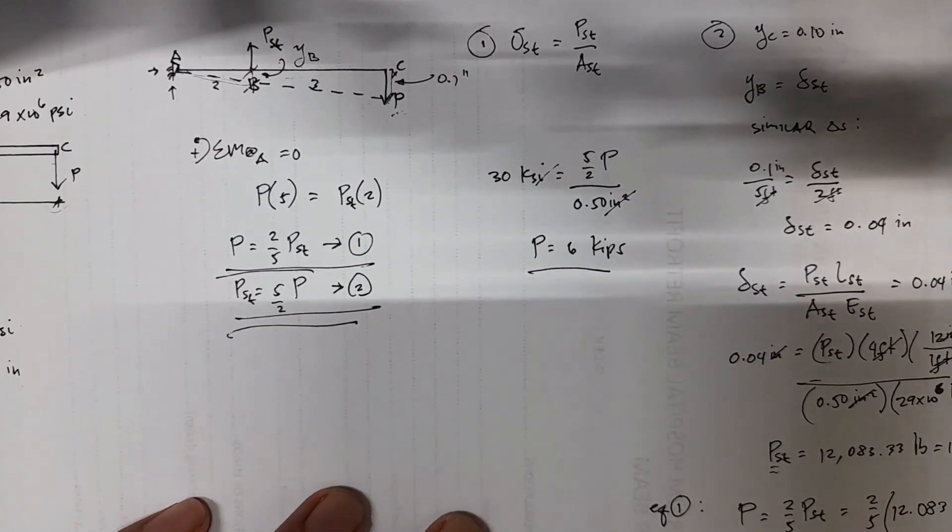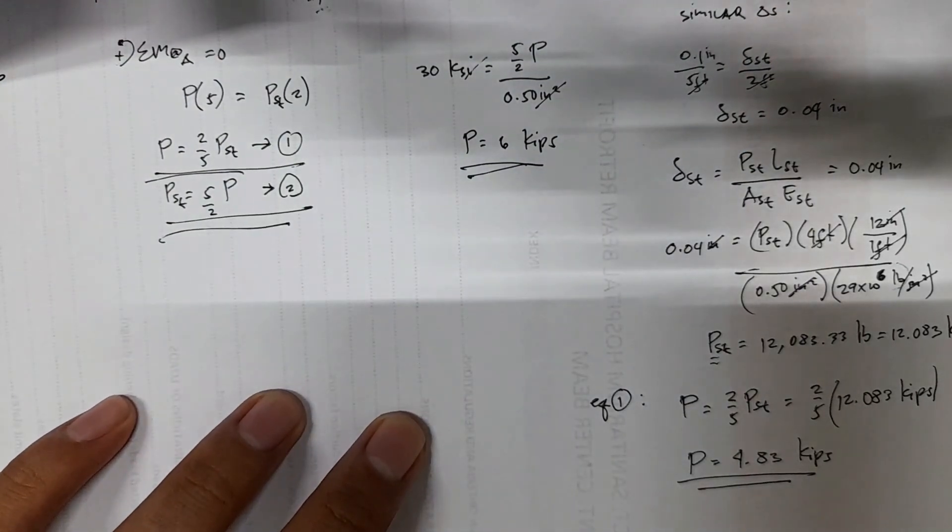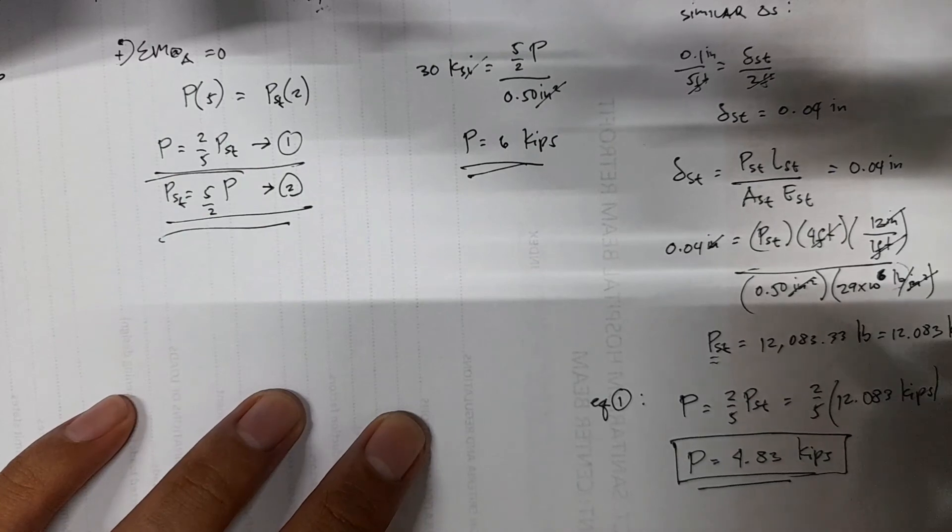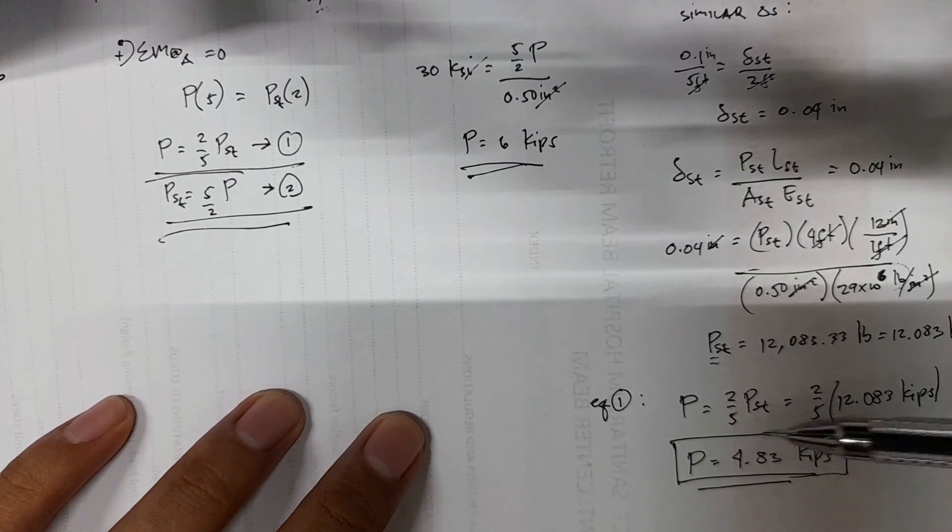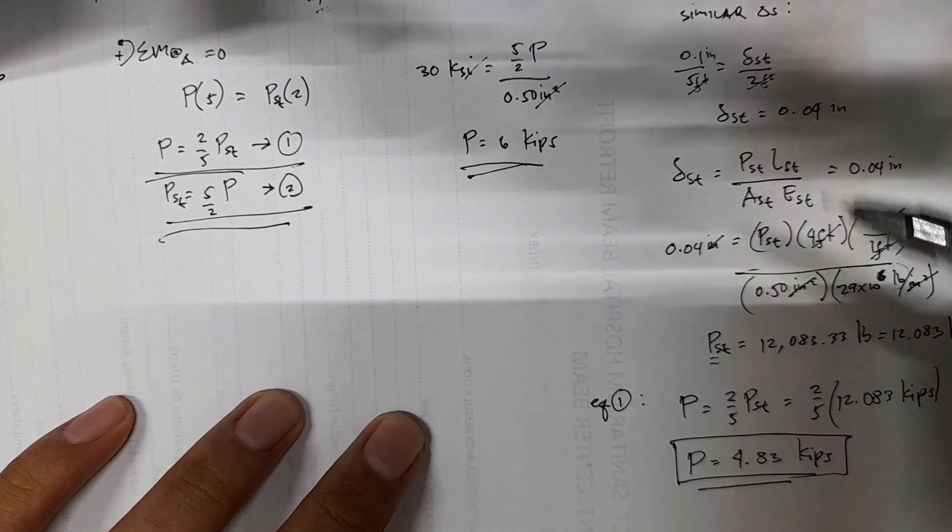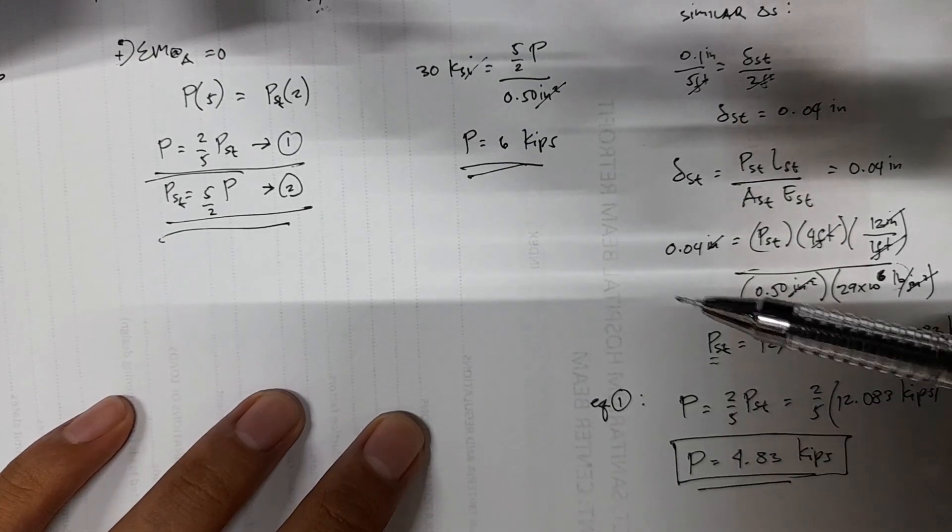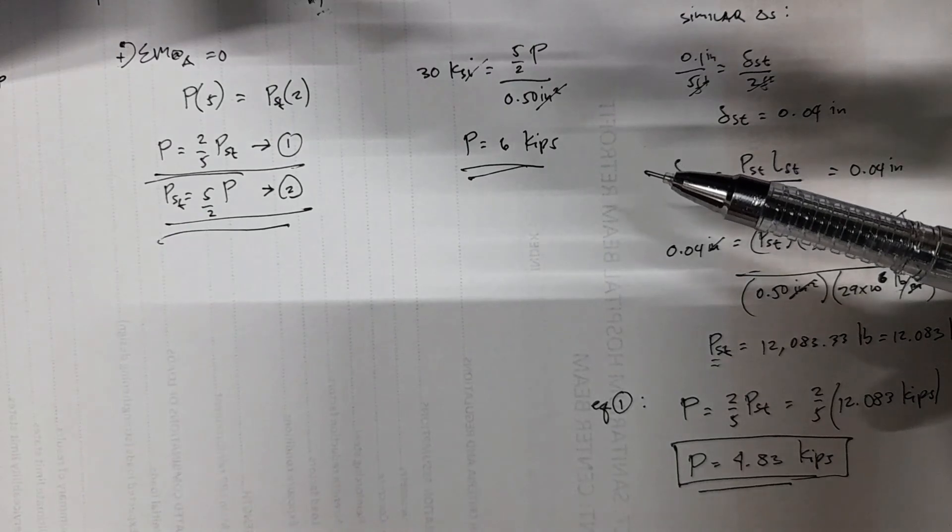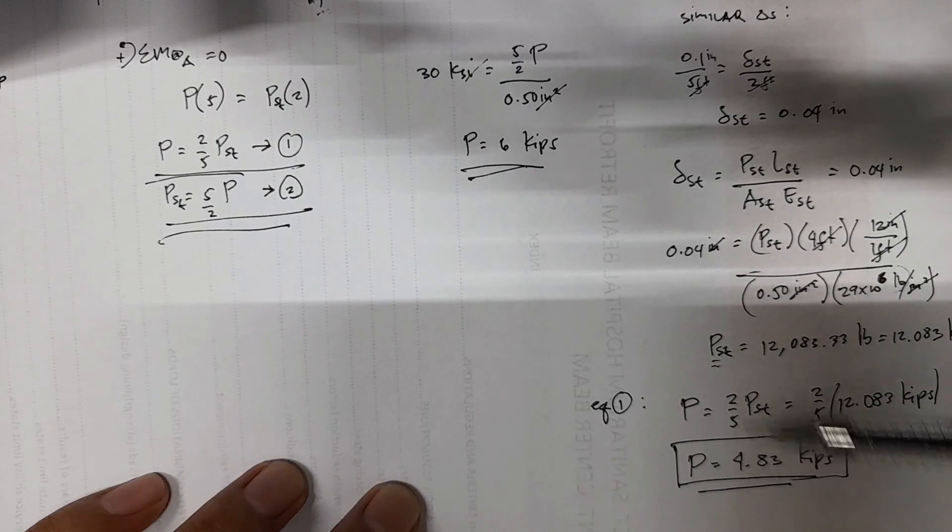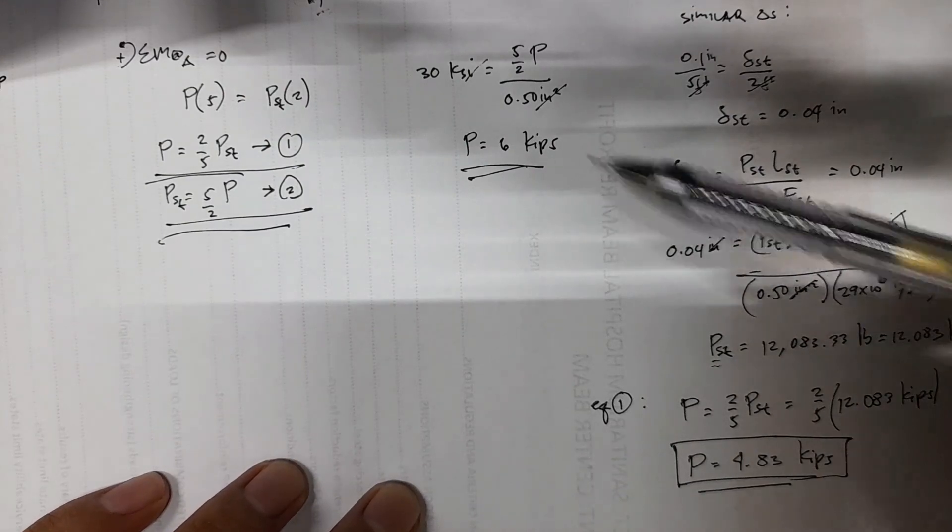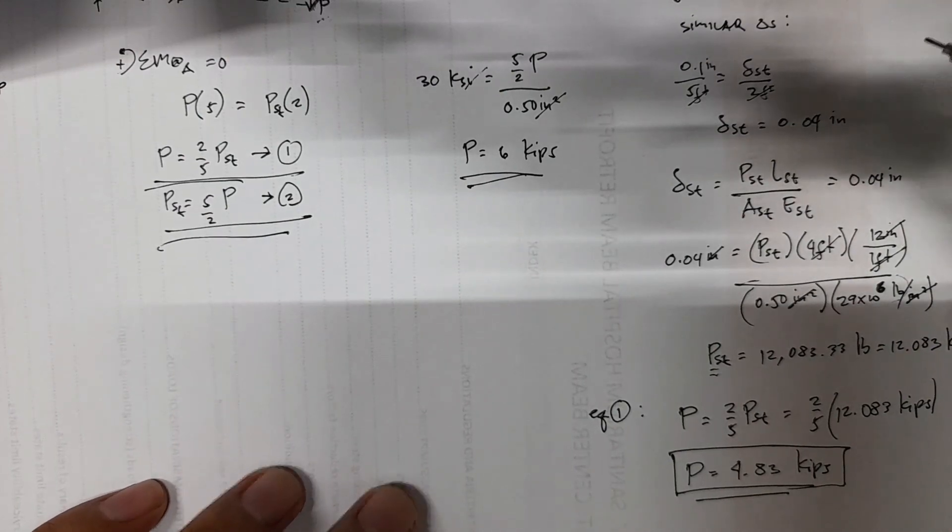So you now have two values of P: 6 kips and 4.83 kips. But we have to choose 4.83 kips, because if we choose this one, since this is the largest P for the movement, any P larger than this would exceed the movement at point C of 0.1 inch. We have to choose the smaller one to meet the two conditions. So that's it.